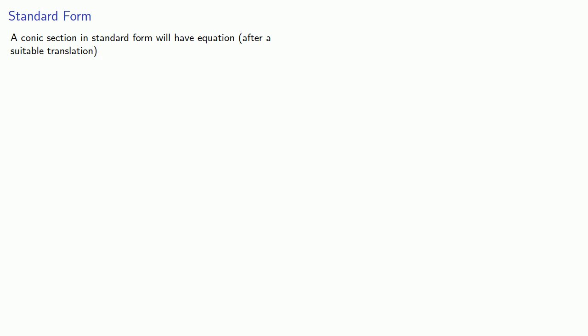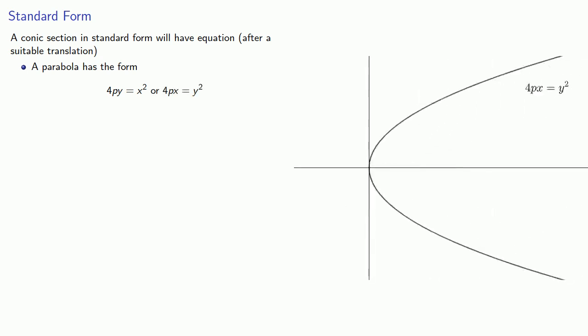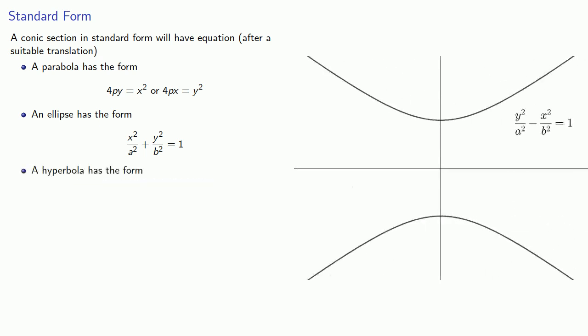A conic section in standard form will have an equation, after a suitable translation, as follows. A parabola has the form 4py equals x squared, or 4px equals y squared. An ellipse has the form x squared divided by a squared plus y squared divided by b squared equals 1, and a hyperbola will have one of these two forms.